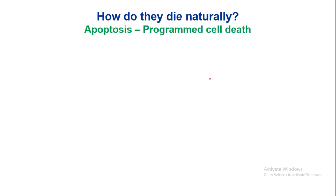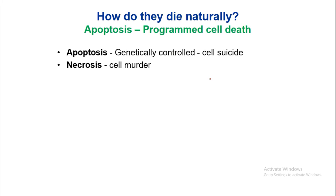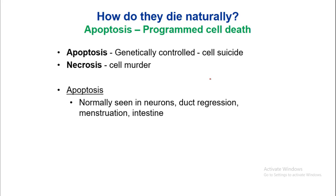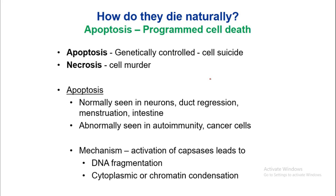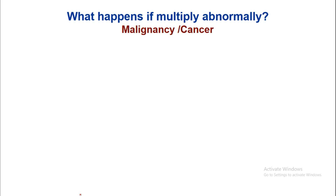How do cells die naturally? This is known as apoptosis — programmed cell death. Apoptosis is genetically controlled and also known as cell suicide. Necrosis is cell murder. Apoptosis is normally seen in neurons, duct regression, menstruation, and in the intestine. Abnormal apoptosis is seen in autoimmunity and cancer. The mechanism involves activation of caspases, leading to DNA fragmentation, cytoplasmic or chromatin condensation, and membrane bleb formation.